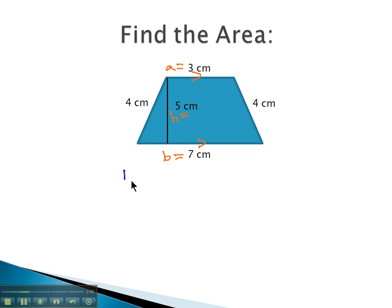We know the formula for the area of a trapezoid is one-half times the height times the sum of the bases. So we'll plug these into our formula: one-half times the height, which we said was 5 centimeters, times the sum of the bases. A was 3 and B was 7 centimeters: 3 centimeters plus 7 centimeters.